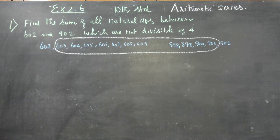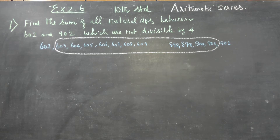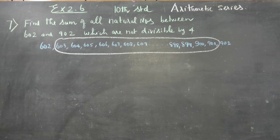From 603 to 901, all the numbers — sum of all natural numbers. We need to add all of them. Between 602 and 902 — 602 should not be included, 902 should not be included. Between means from 603 to 901.